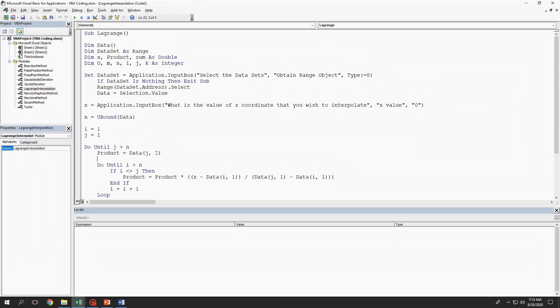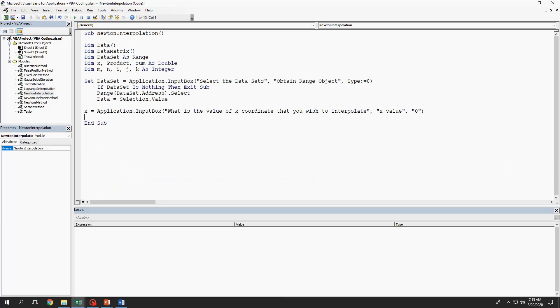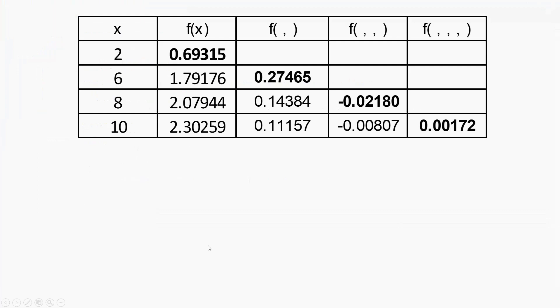This last part of the video is for the computerized computation using Newton's interpolation. Again, insert another module for our new method and rename it as Newton interpolation. Create a sub-procedure and name it as Newton interpolation. Then, define the variable and their variable types as well as the input box for the dataset and the x-coordinate. U-bound function to count the number of datasets.